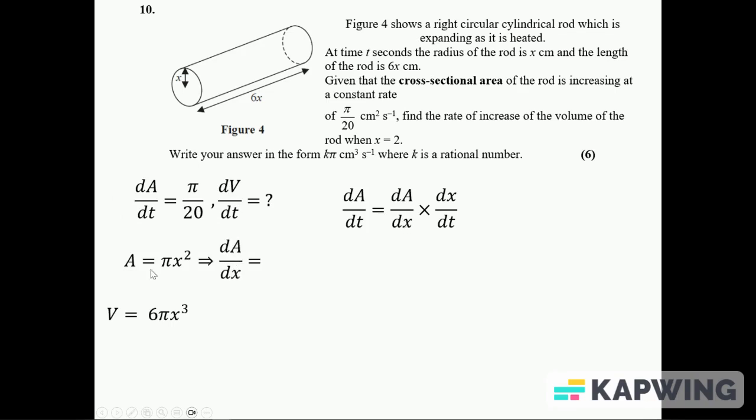So we need to know what dA over dx is. If we know the formula for the area and then differentiate in terms of x, that just gives us 2π x.